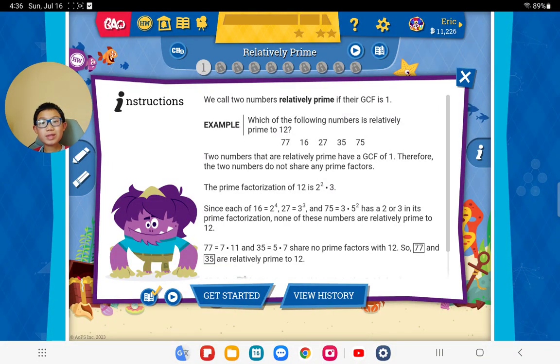Read the instruction, please. We call two numbers relatively prime if the GCF is 1. Do you know how to get the GCF? Yeah. So if the GCF is 1, it means relatively prime. Okay, let's start, please.